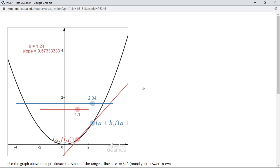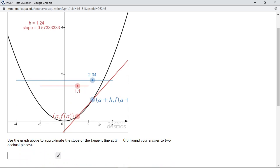So what this problem is asking us to do is to find the slope of the tangent line at x equals 0.5. So how we're going to do this is the red dot is our placement. It's the point that we're staying focused around. So I'm going to move that to 0.5.